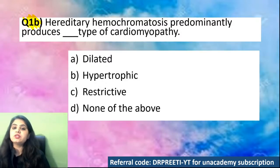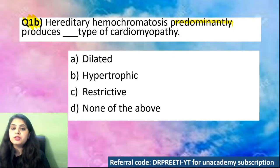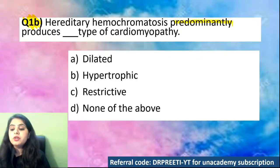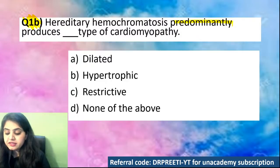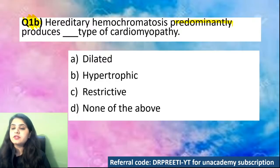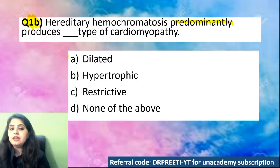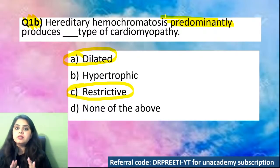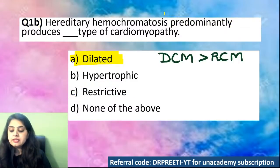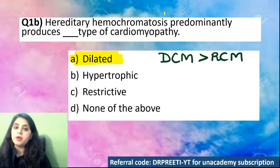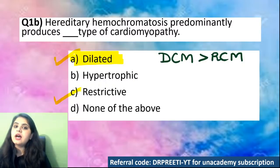Part two of question one: Hereditary hemochromatosis predominantly produces which type of cardiomyopathy? It's a combination — it can produce two types. Many of you have a confusion between dilated and restrictive, and I don't blame you because it can show both. But the predominant form is DCM — dilated cardiomyopathy — more than restrictive. If you have to select one, go for dilated; if you can select both, go for restrictive. A controversial question.